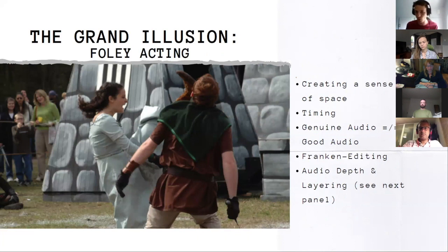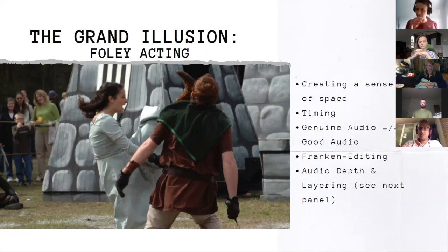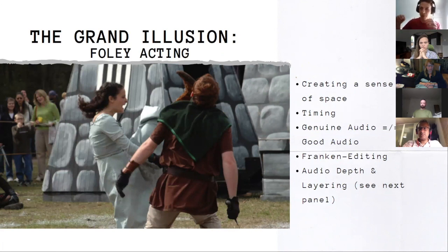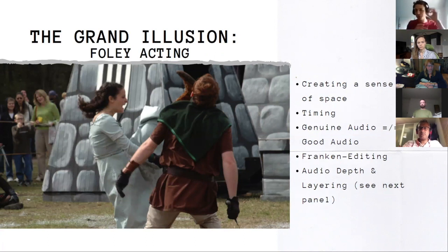With Franken editing, you'll use different parts of different takes — maybe you didn't like the full 'oof,' so you take a piece of it, or at the end of a hit you can hear someone's cat screeching in the background, but you have a second hit without the cat, so you steal the tail end. This leads to layering to create audio depth — combining multiple sound effects to create the illusion of one action, because frequency is complex. You don't need to think of a sound effect as a single clip.